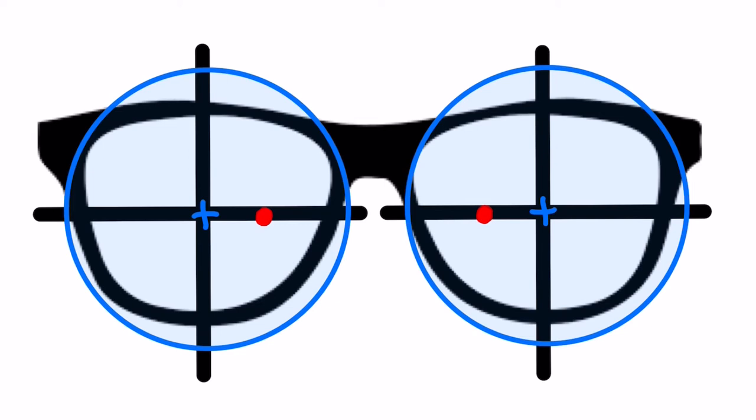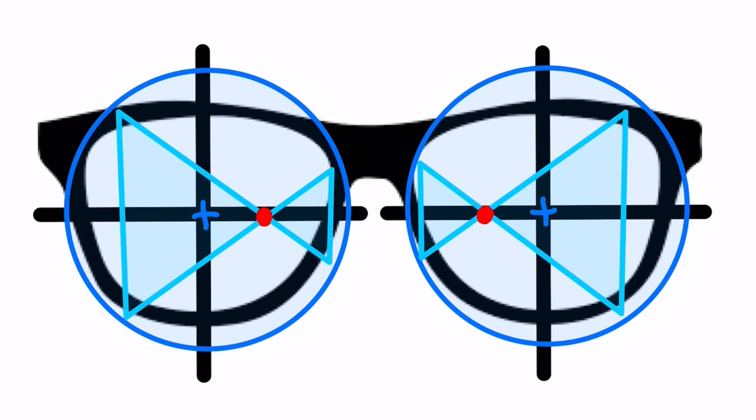a decentered OC would create base out prism at the geometric center. The OCs were decentered in towards the nose and the resulting prism at the geometric center caused by the minus lens shape would be base out.